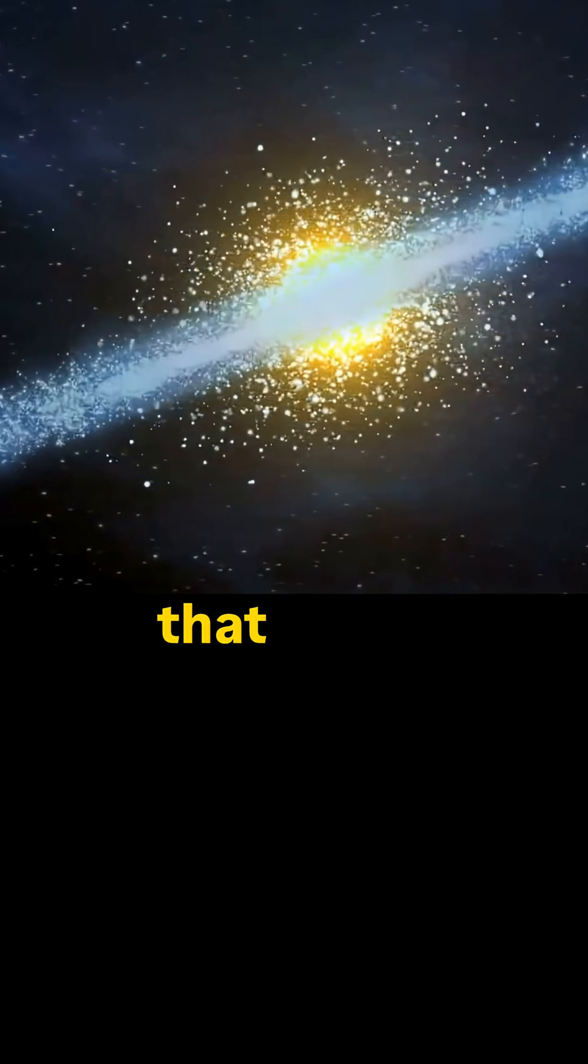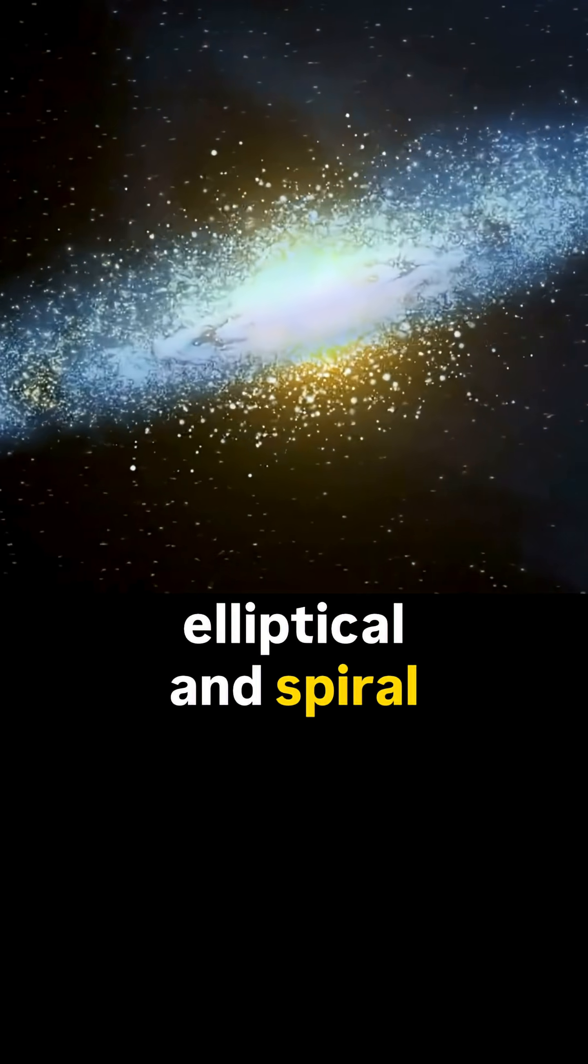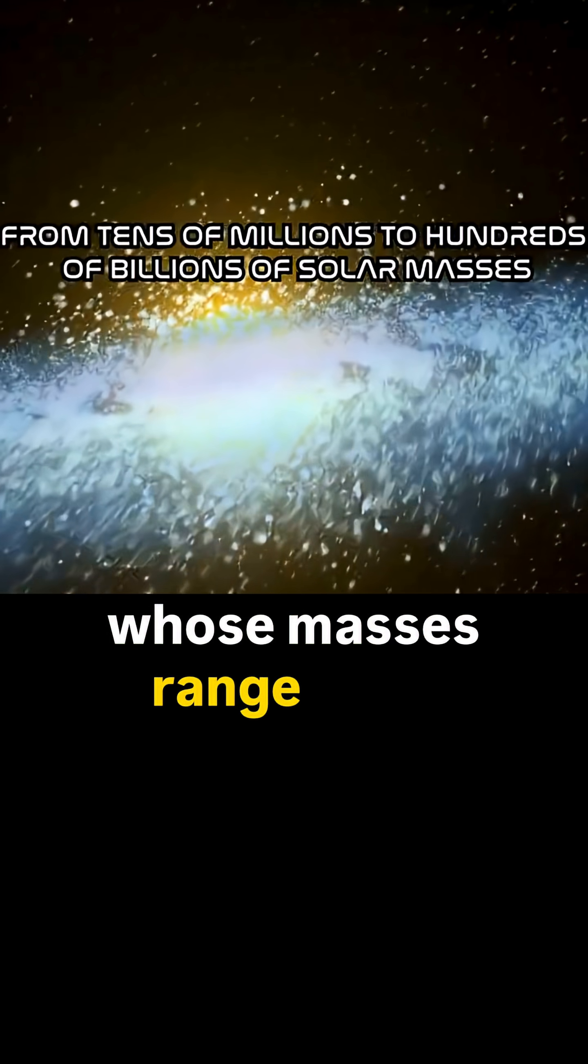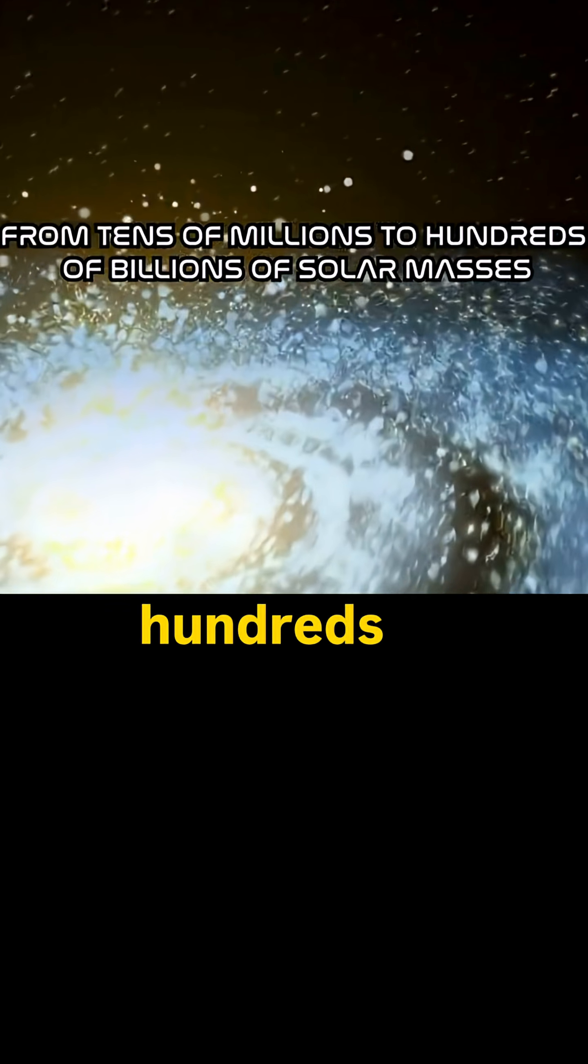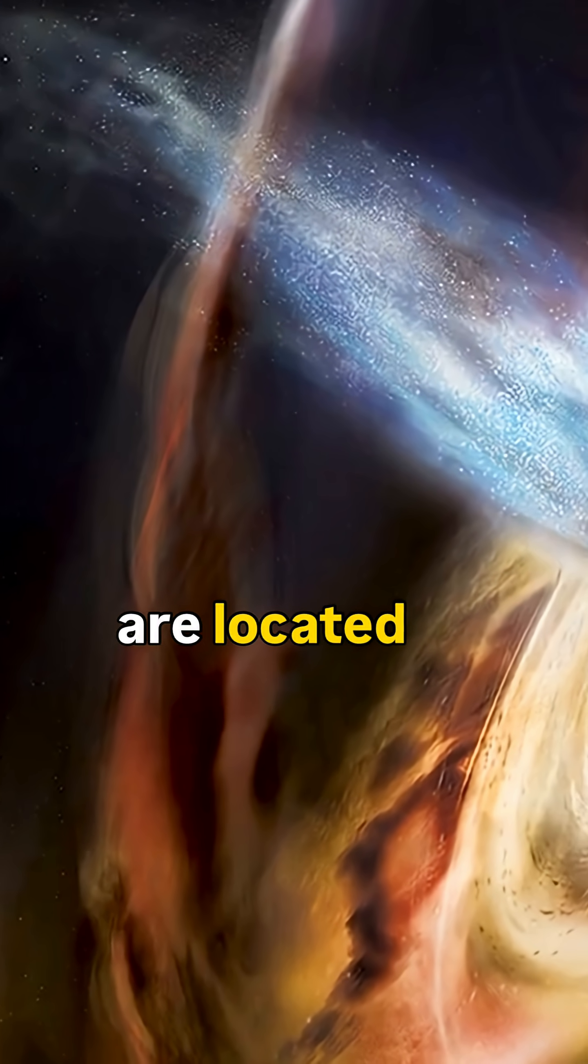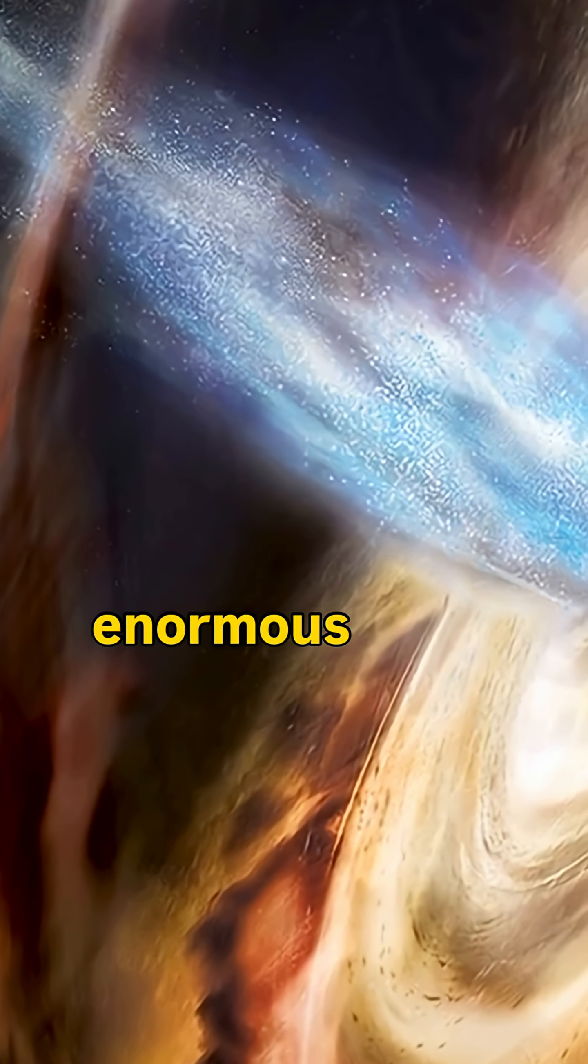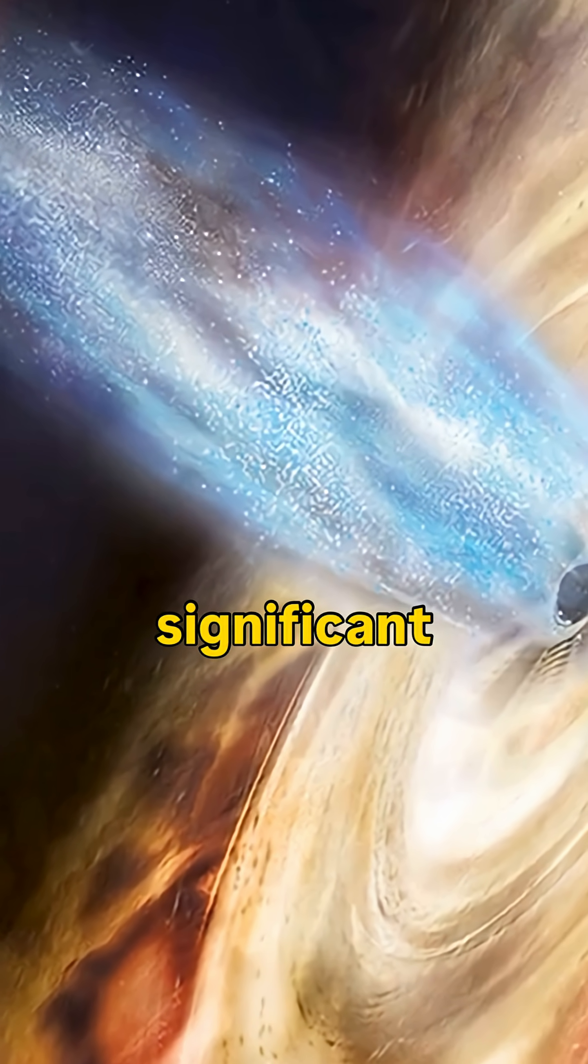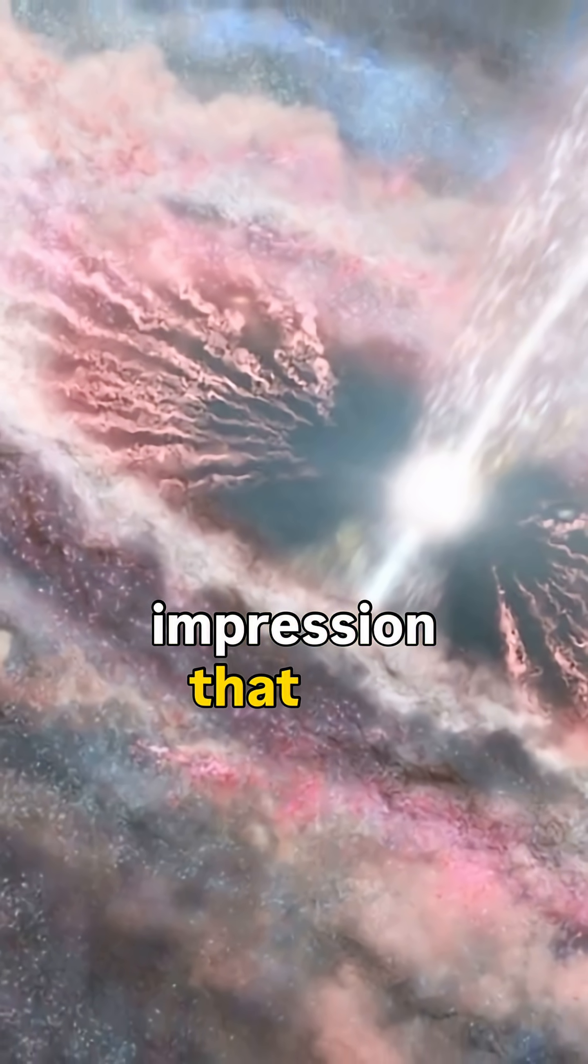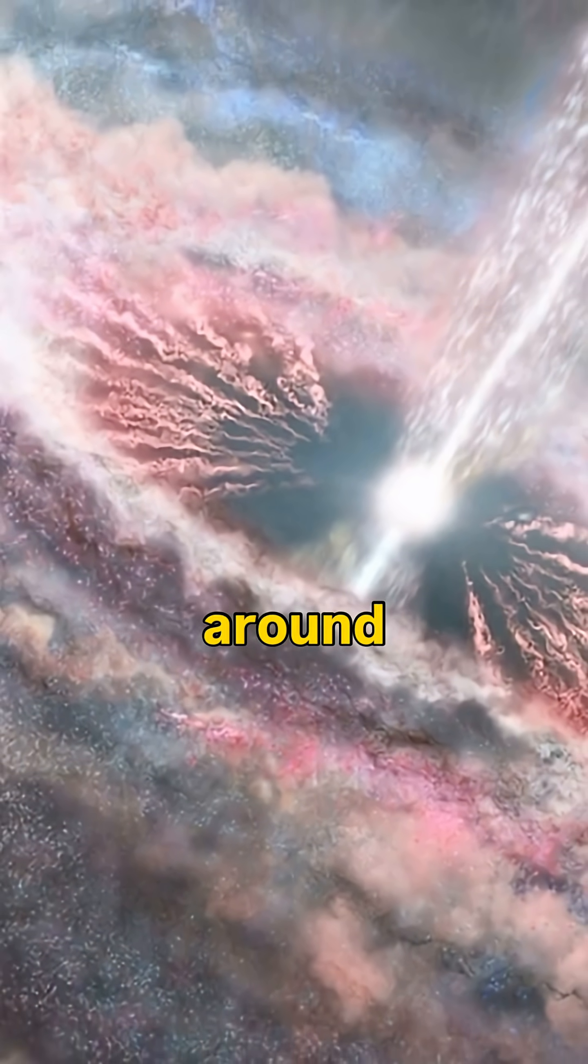Scientists do indeed state that at the centers of all elliptical and spiral galaxies there are supermassive black holes whose masses range from tens of millions to hundreds of billions of solar masses. Because these black holes are located at the centers of galaxies, have enormous mass, and exert a significant gravitational pull, people get the mistaken impression that the entire galaxy revolves around them.